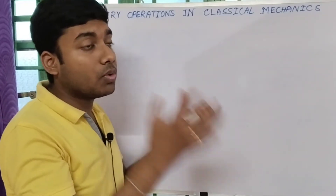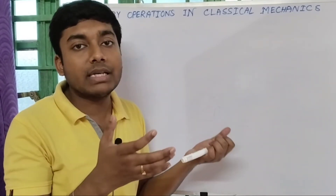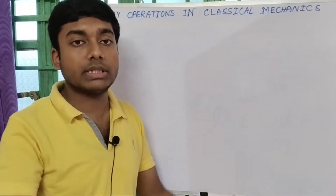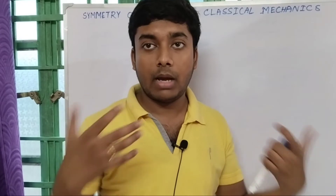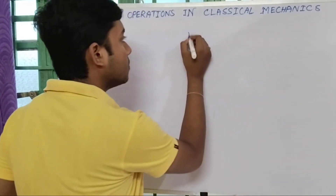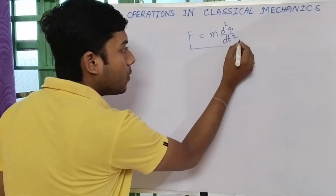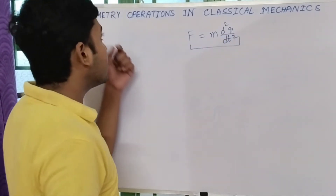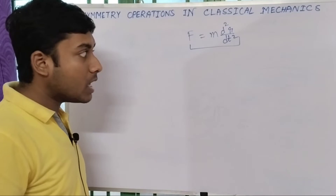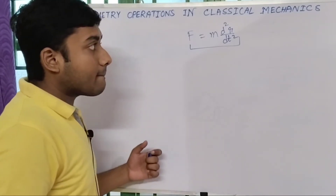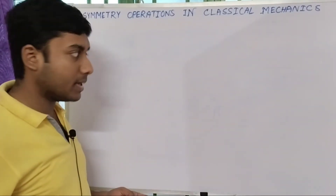What we will do in this video is try to investigate whether Newton's second law — the fundamental law F equals m d²r/dt² — is valid under these three types of continuous symmetry operations. We will start by discussing space translation.